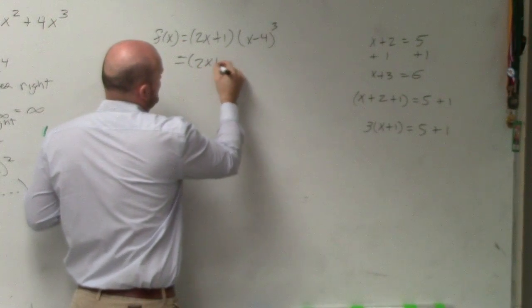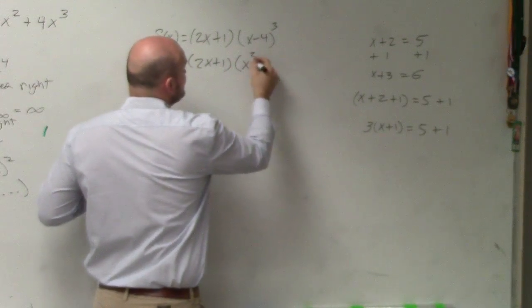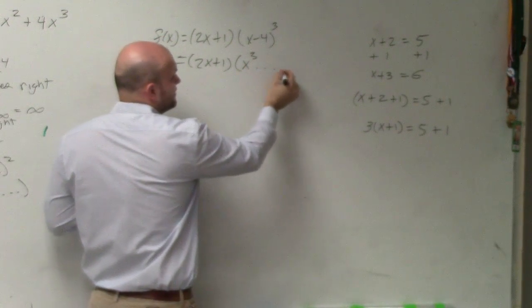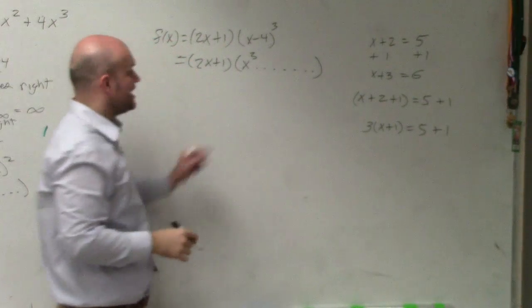So therefore, I have 2x plus 1 times x cubed, the highest power. I don't really care what else is after that. I know that's the highest power.